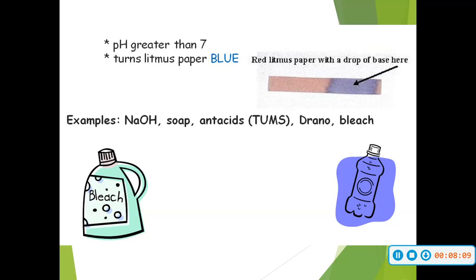Your pH this time is going to be greater than 7 on the pH scale. Your litmus paper is going to turn blue this time — so if you use a red litmus paper and you drop a base on it, it's going to turn blue. Now, if you go back a few slides, you'll notice that the blue litmus paper turns red if you add an acid. But if this is red litmus paper and we dropped an acid on it, it's actually not going to change colors — the red litmus paper will still stay red.